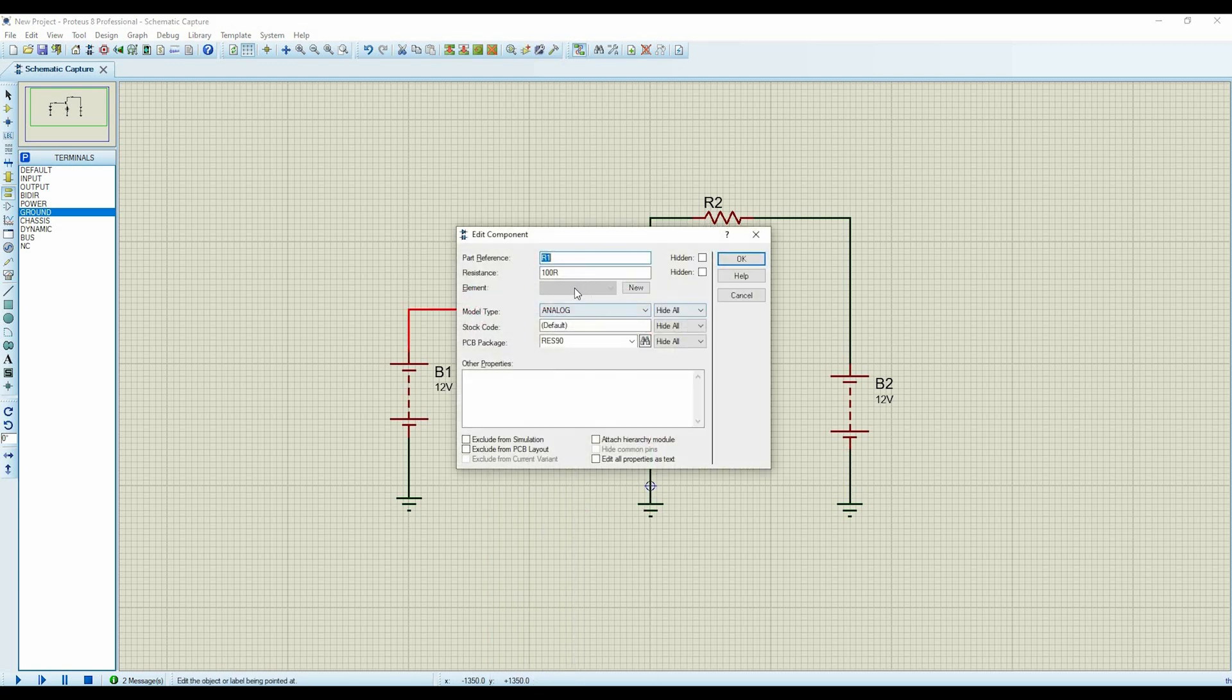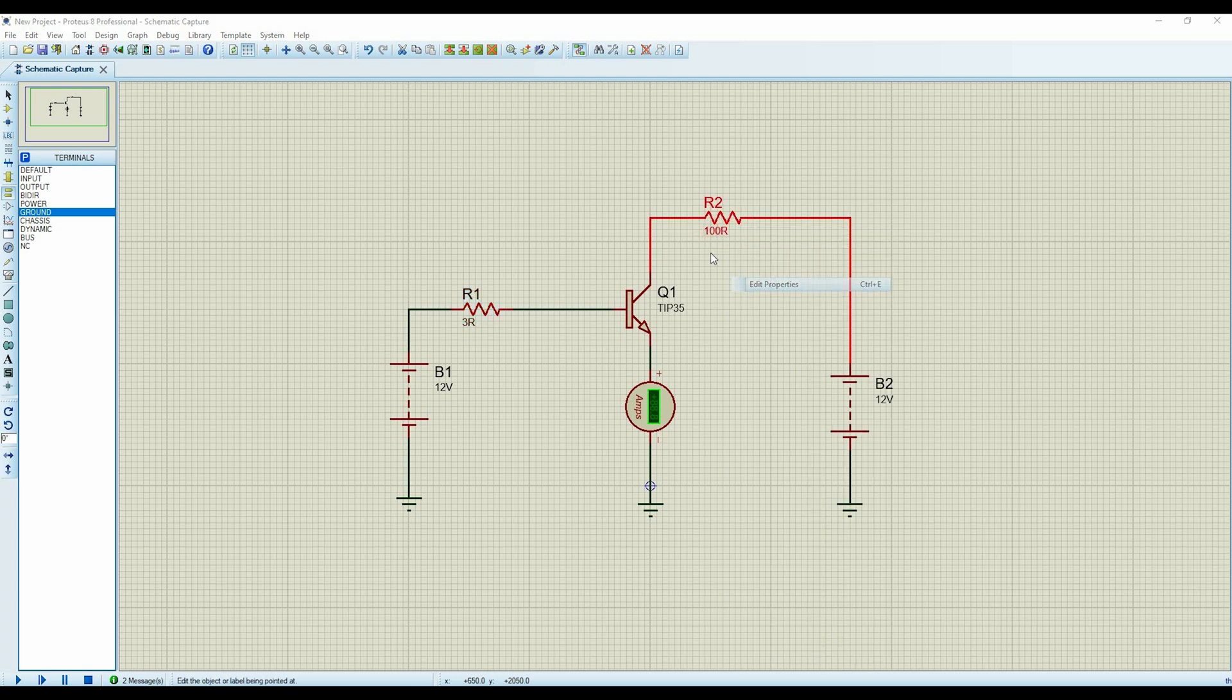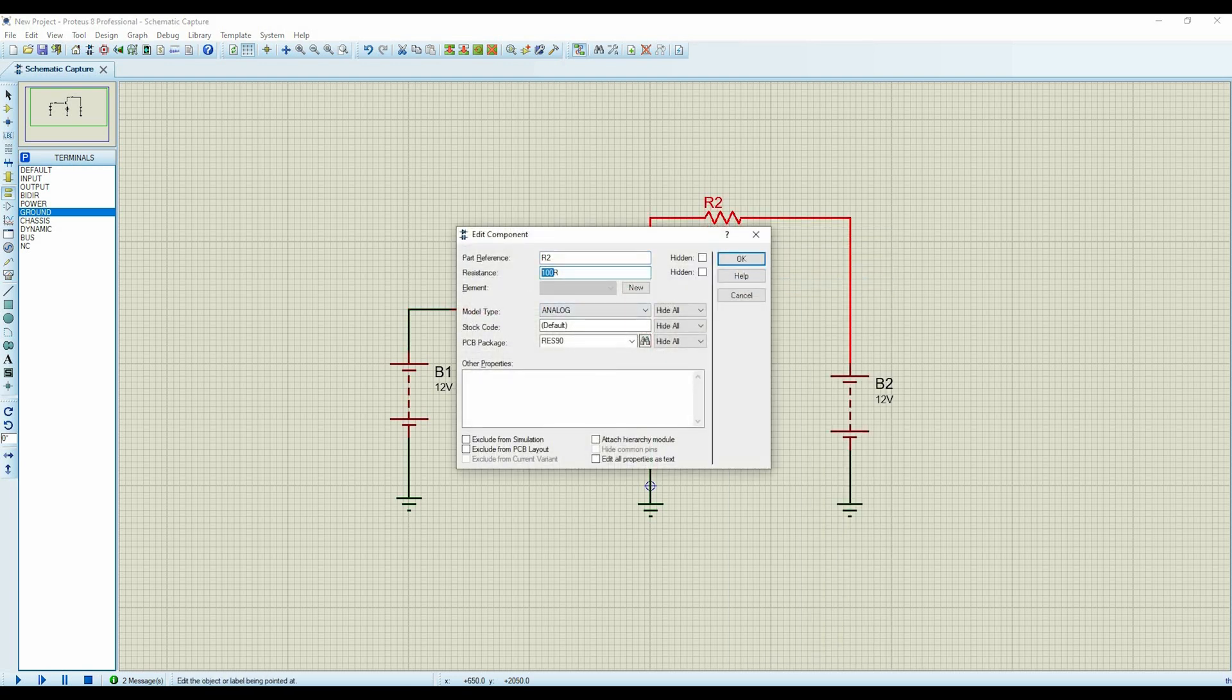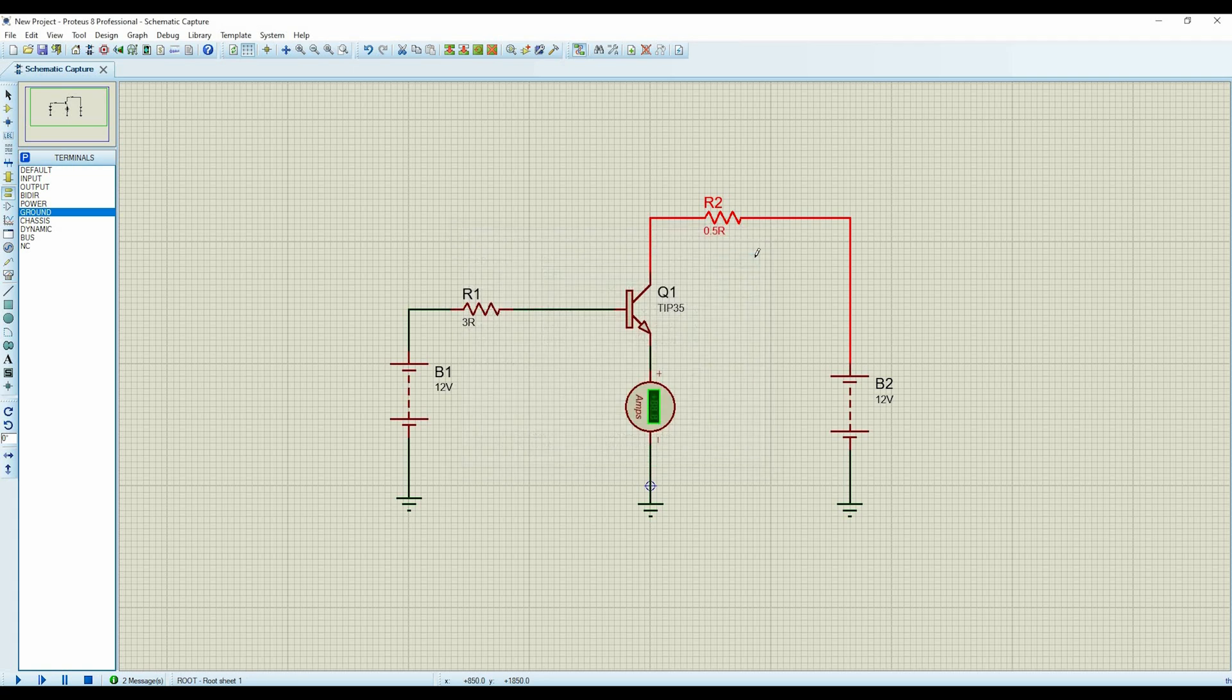The current of base we will limit with resistors 3 ohms. We will take the resistor 0.5 ohm as a load of our circuit.